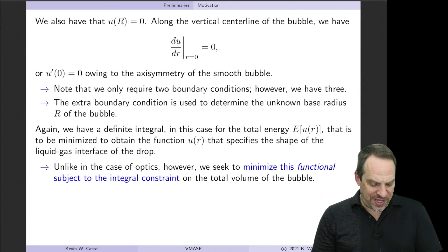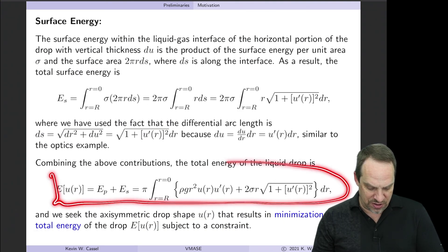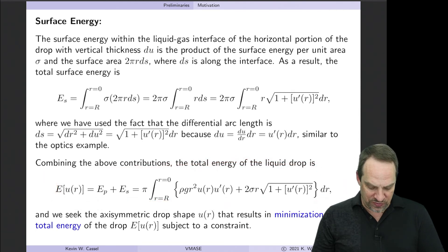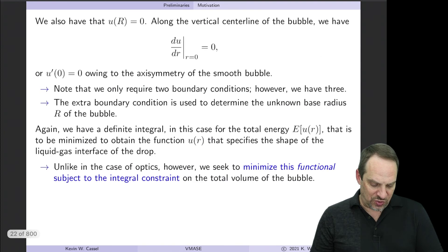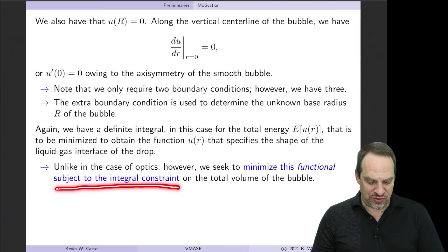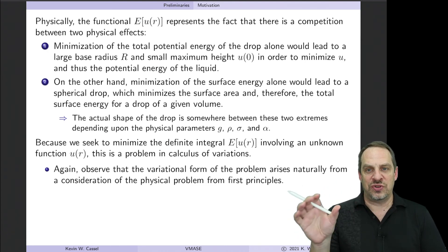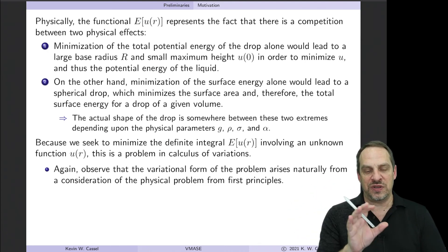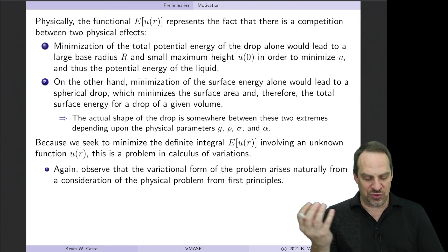In the end, we have a definite integral for the total energy, and we're looking for U as a function of R that minimizes that total energy — the function that minimizes this functional, subject to our integral constraint on the total volume. We had two contributions to the functional, two definite integrals summing to give the total energy, reflecting the physics of the problem.